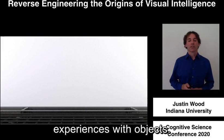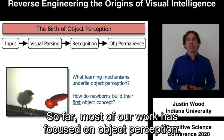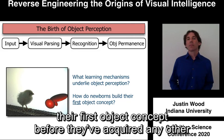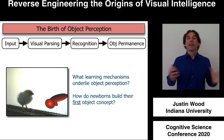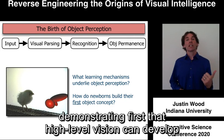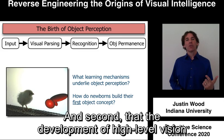So far, most of our work has focused on object perception — specifically, how newborn animals build their first object concept before they've acquired any other visual experiences with objects. I'll briefly show you a few of our findings demonstrating, first, that high-level vision can develop rapidly in newborn brains, and second, that the development of high-level vision requires experience with a naturalistic visual world.